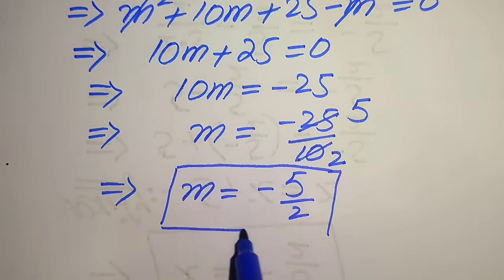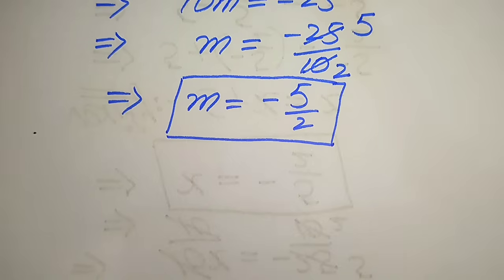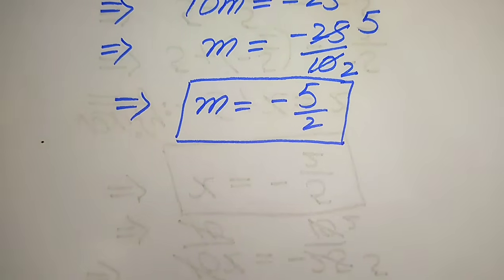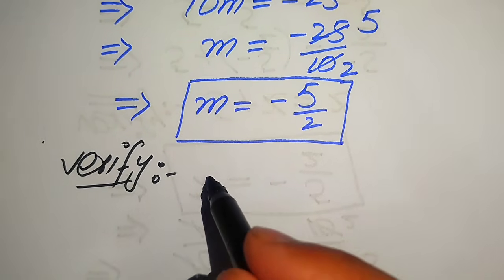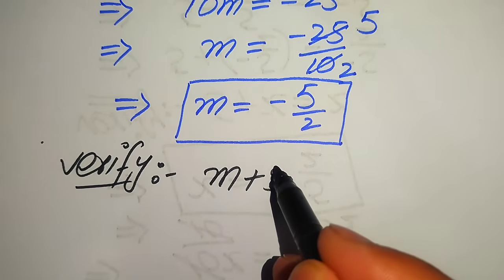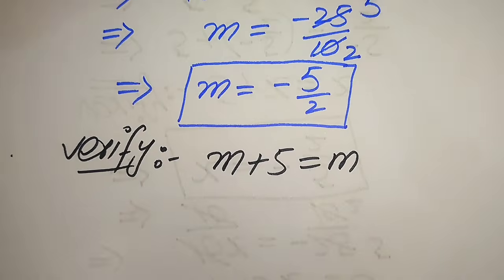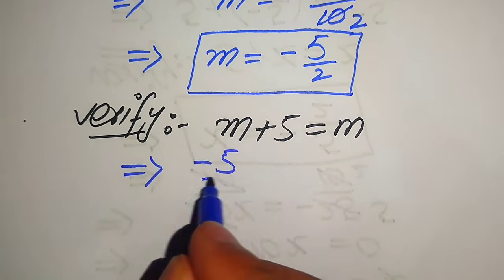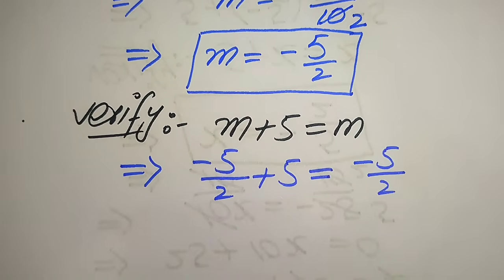In the next step we need to verify this value of m and check whether it satisfies the given question statement or not. For verification we copy down the given question statement: the square root of m plus 5 equals m. Now we put the value of m equals to minus 5 over 2 on both sides, so it becomes the square root of minus 5 over 2 plus 5 equals minus 5 over 2.